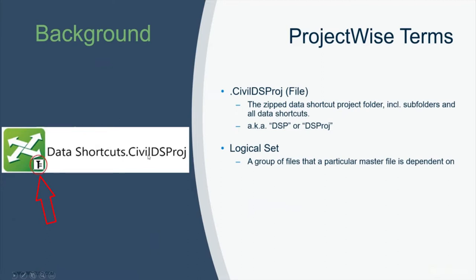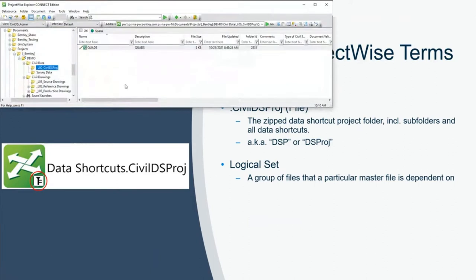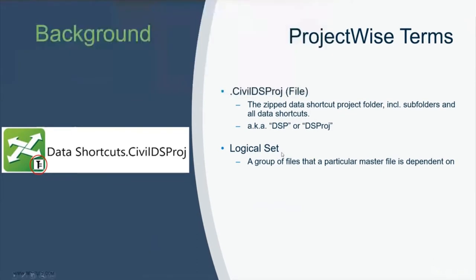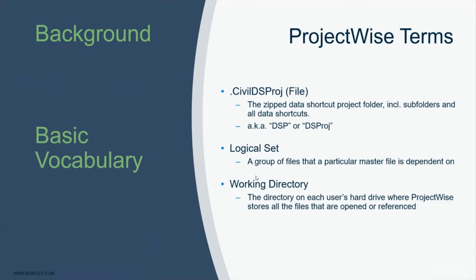The second term is logical set. A small icon is added to the application indicating that a document in focus has dependencies — we call those its logical set. The third term is the working directory, which is not the same as Civil 3D's working folder. In ProjectWise, the working directory is where all files stored centrally on the server are transferred to your local machine so you can work with them.